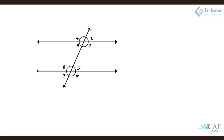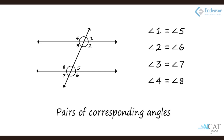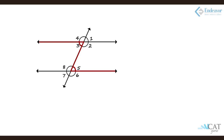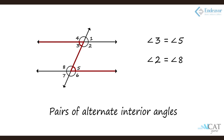When parallel lines are intersected by a transversal — a line that intersects two parallel lines — corresponding angles become equal. Angle 1 equals angle 5, angle 2 equals angle 6, angle 7 equals angle 3, and angle 4 equals angle 8. These pairs (1 and 5, 2 and 6, etc.) are called corresponding angles. If we form a Z-shape, angles 3 and 5 are called alternate angles or alternate interior angles.